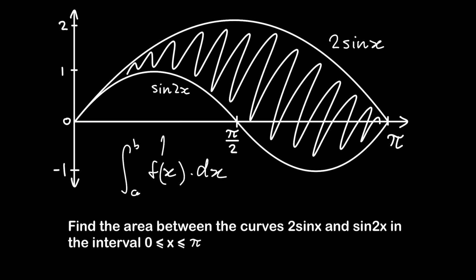Our function is the higher curve subtracted by the lower curve. So our function is 2sin(x) - sin(2x), and we're integrating between 0 and π. Let's do this integration.